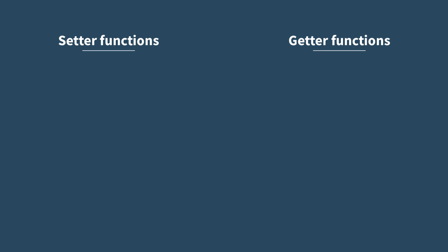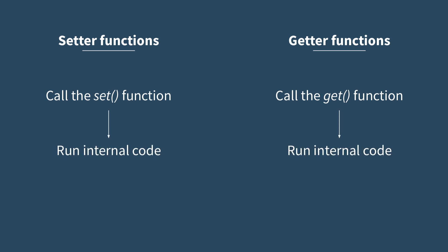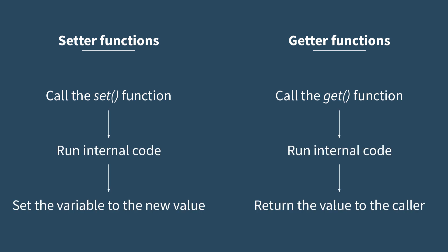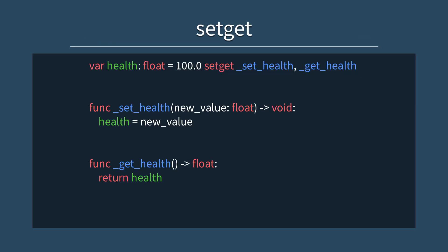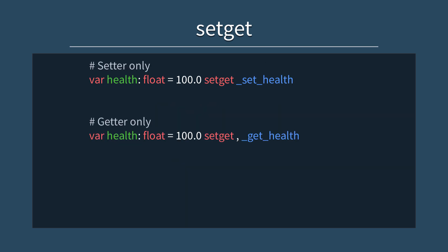In case you're unfamiliar with them, setter and getter functions allow you to write custom logic to be run when a variable is written to or read from. In GDScript, you do this by adding the set/get command after declaring your variable, followed by the names of the setter and getter functions in that order. You'll also want to make sure these functions are declared somewhere in your code, with the setter function setting the variable to a new value and the getter function returning a value. If you only want a setter or a getter, simply use the same format but omit the undesired function name.